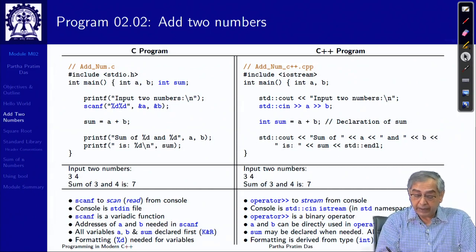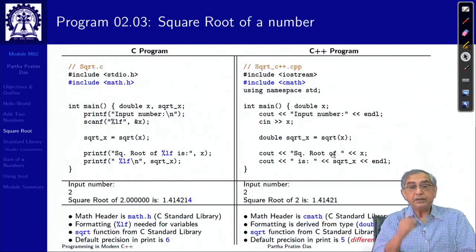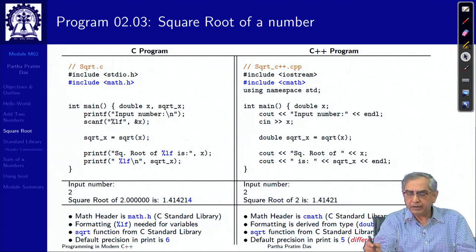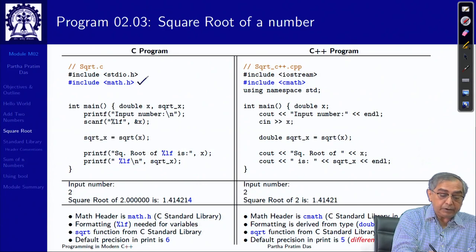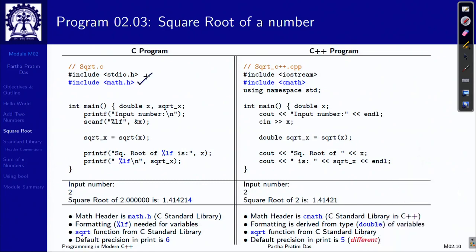Let us move to the next example: finding the square root — again a very simple program. Besides input/output, for finding a square root you need to include math.h in C. Equivalently in C++ you include cmath — the mathematical library. We will discuss this more, but this shows that anything in the C standard library can be used in C++ by including the library as 'c' followed by the library name, without the .h. So math.h becomes cmath, stdio.h becomes cstdio, and so on.